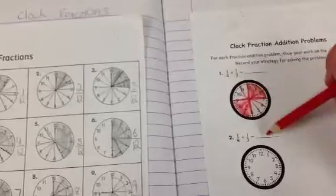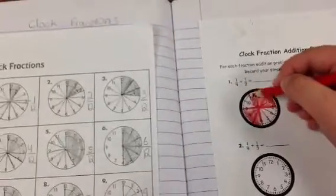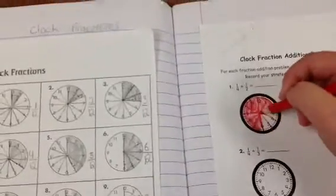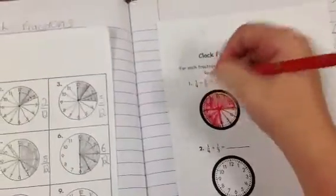That was one-fourth. And then... What would one-half of the whole circle be? I mean, I was going to color in two boxes because that's a half, one-half.